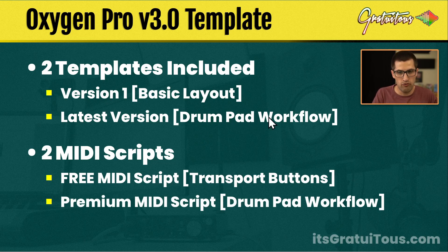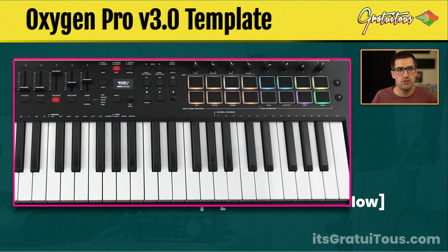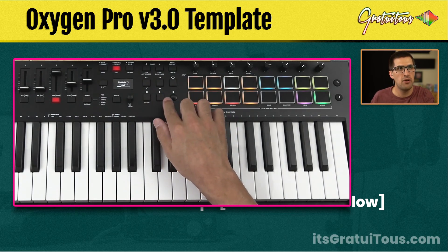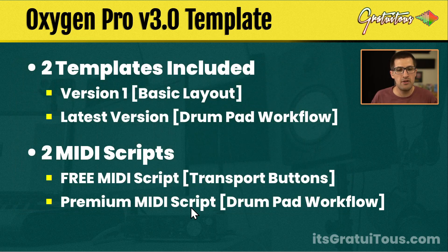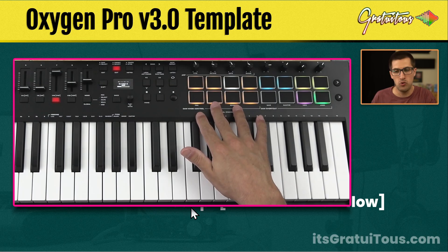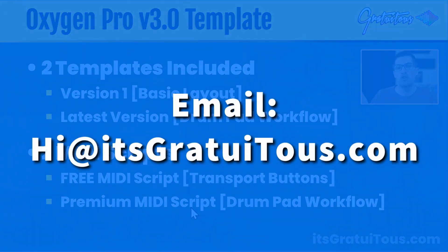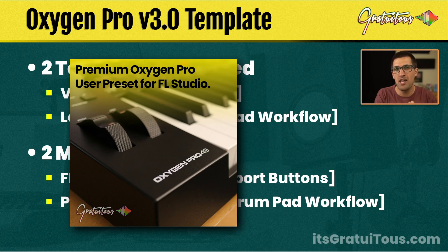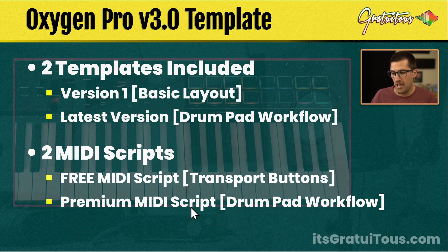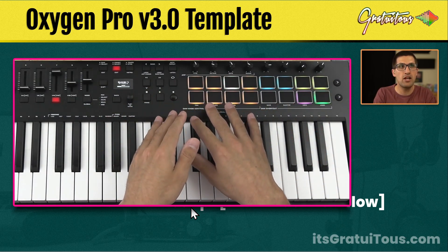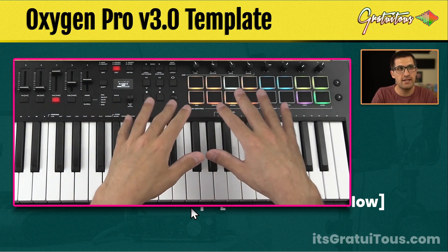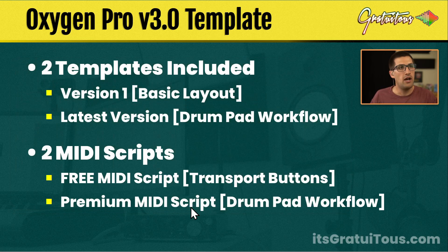If you want the drum pad workflow, you're going to need the template as well as both MIDI scripts. The free one is for the transport buttons — stop, play, record, back a bar, forward a bar, loop button. The premium MIDI script is for the drum pad workflow. If you have any questions, feel free to contact me at hi@itsgratuitis.com. I hope you enjoy my M-Audio Oxygen Pro template for FL Studio. The drum pad layout has saved me a lot of mouse time — when I'm making beats, I can keep my hands up on the keyboard a lot more. Thank you so much for your business.